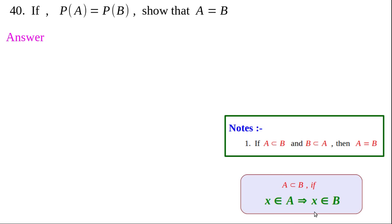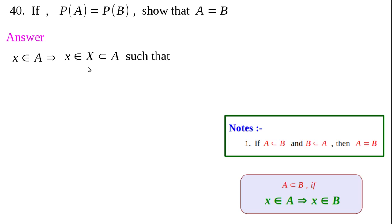Let x∈A. There exists a subset X of A such that small x belongs to capital X. Since X is a subset of A, we can say X∈P(A) — the power set is the set of all subsets. Since P(A) = P(B), we replace P(A) by P(B), so X∈P(B) also.